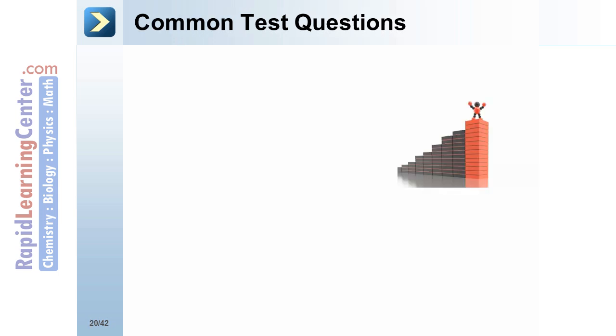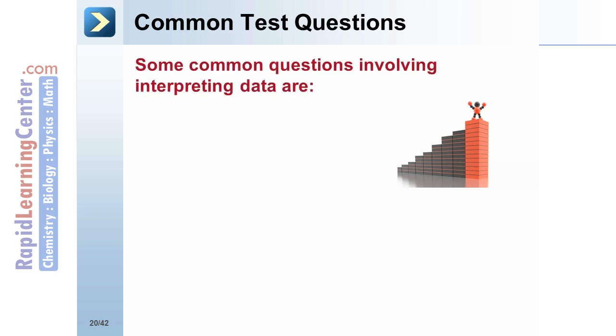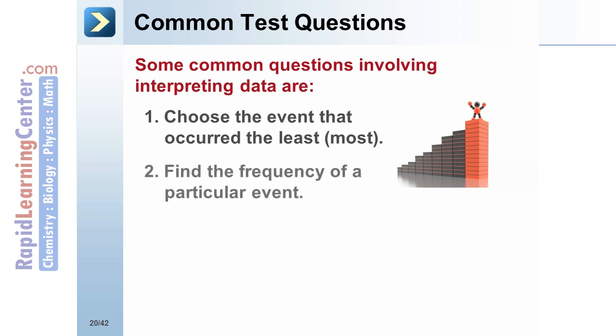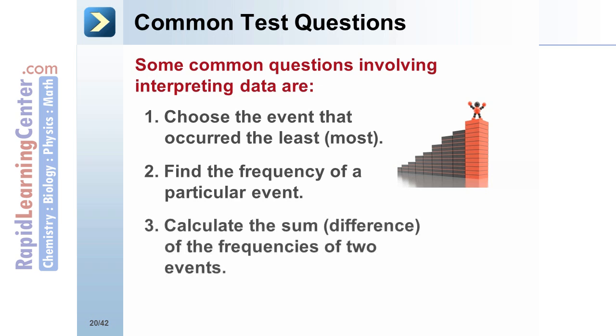Common test questions: Some common test questions involving interpreting data are: one, choose the event that occurred the least or the most; two, find the frequency of a particular event; three, calculate the sum or difference of the frequencies of two events; and four, decide which event is least or most likely to occur.